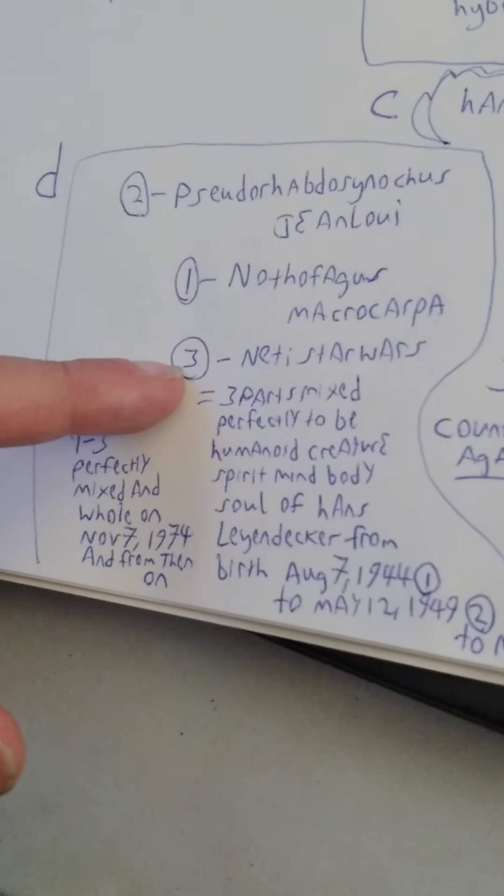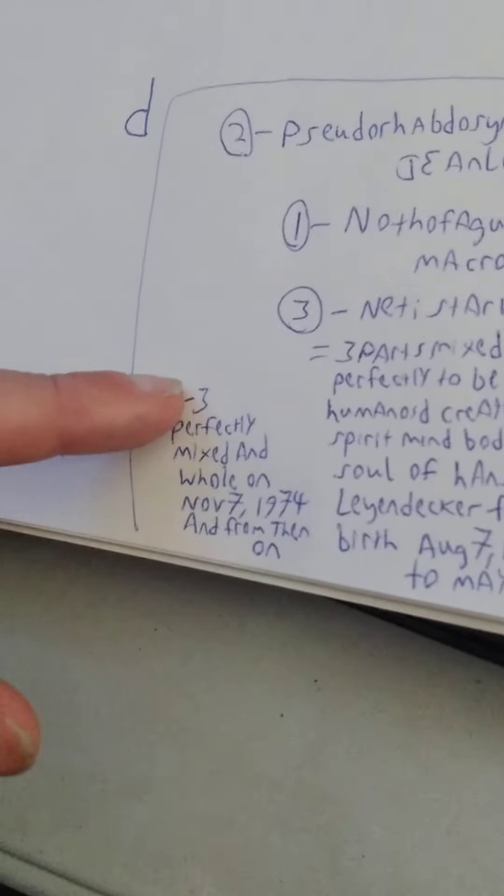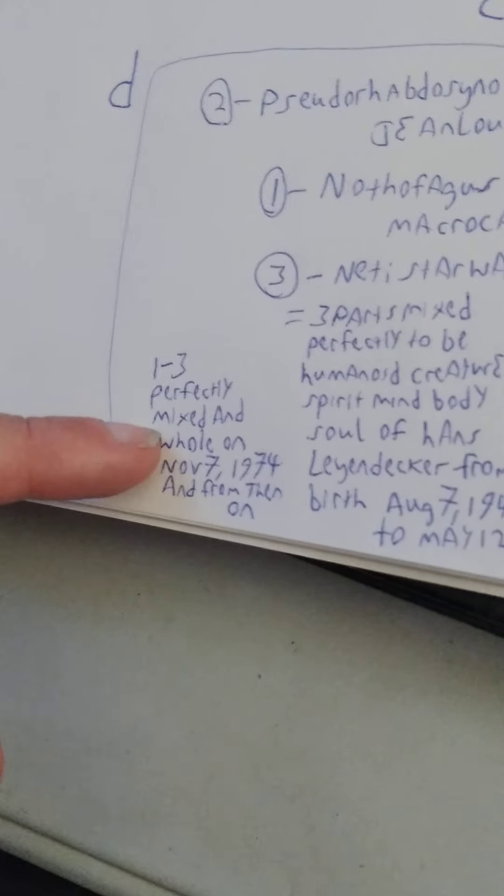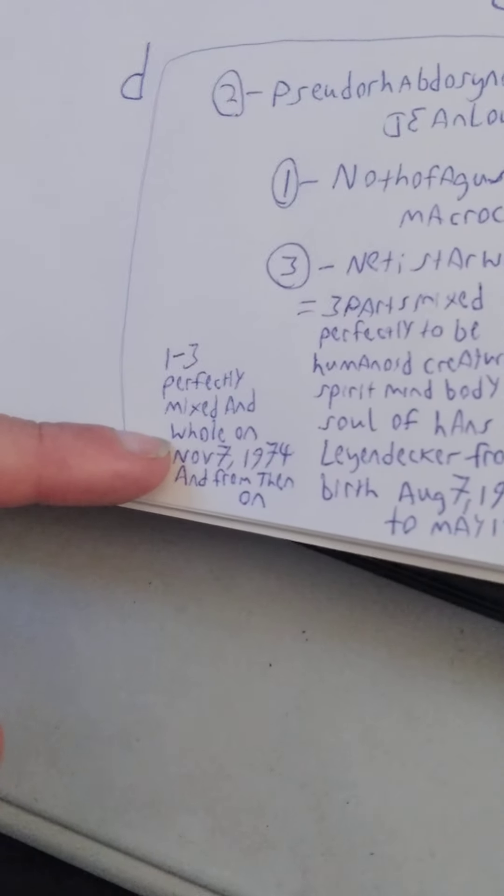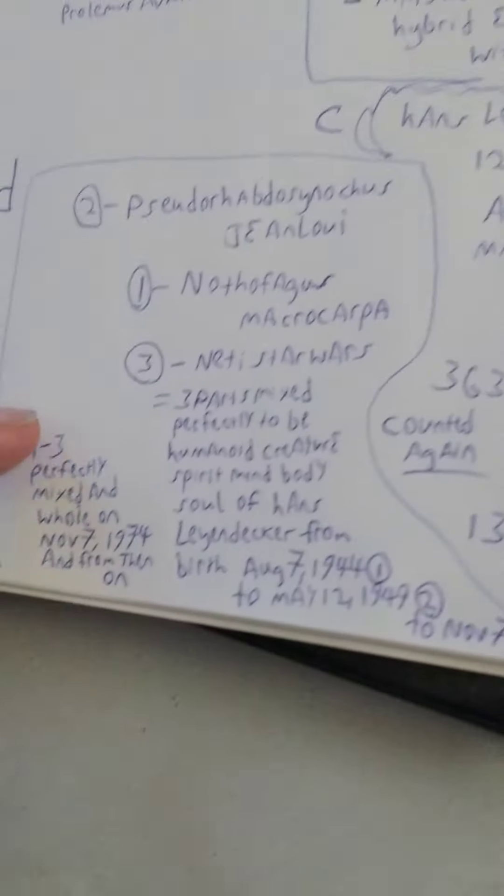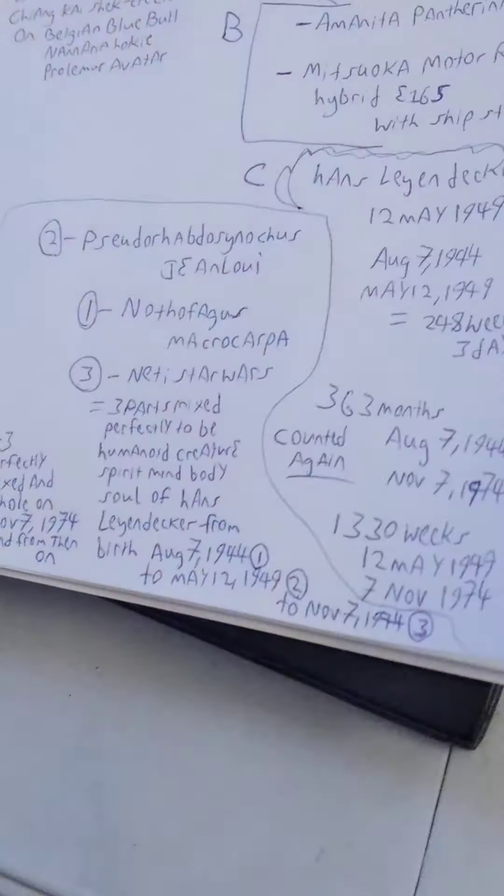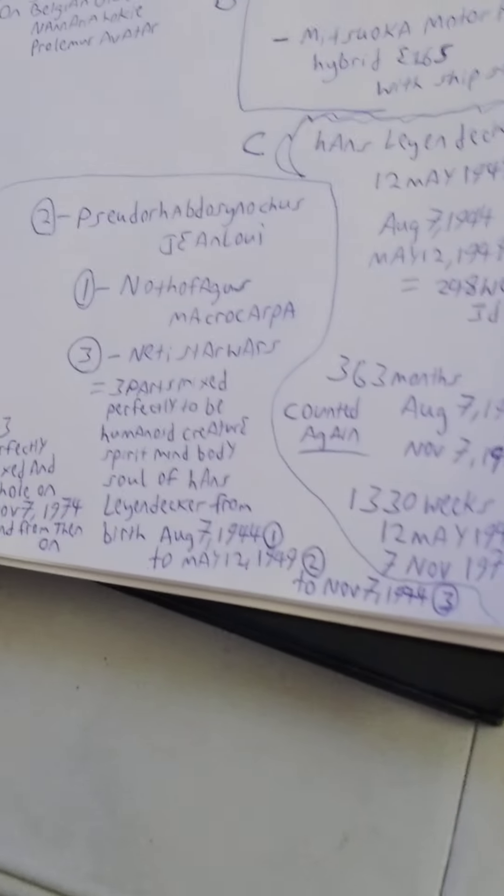this Jim Lowie, and to November 7th, 1974 would be three, he got the Neti part of it. Now one through three are perfectly mixed and whole on November 7th, 1974 and from then on and he's still living today.